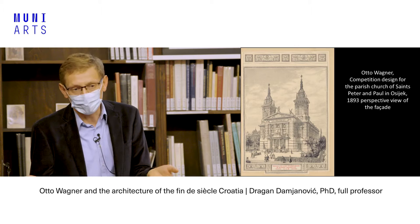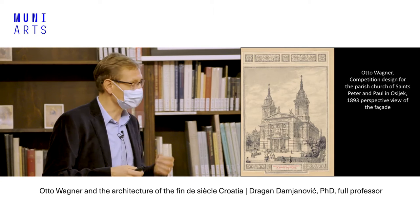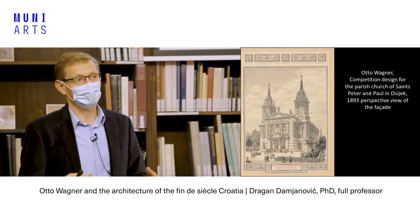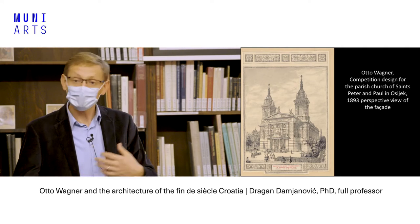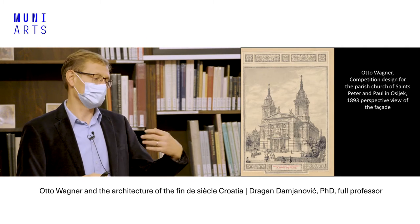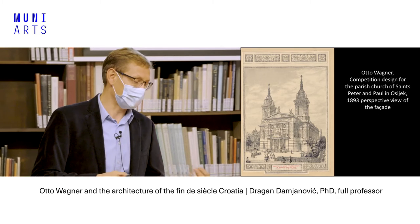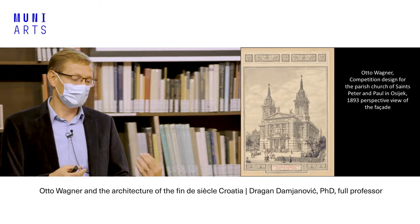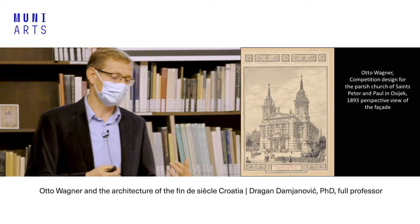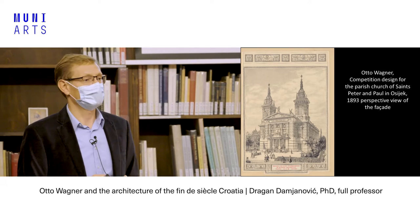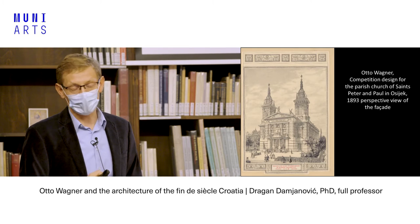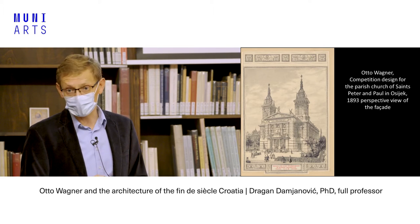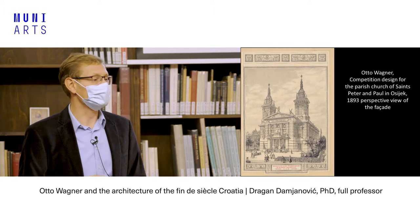In 1893, the local community decided to organize a competition for the church plans, and 31 designs were sent by various architects. The designs were coded, as was usual for the period. The jury included members of the local community as well as architects from Vienna — Ludwig Wächtler, Julius Hermann (who was the Dombaumeister of St. Stephen's Cathedral at the time), and Victor Luntz, a professor at the Academy of Fine Arts in Vienna and successor of Friedrich von Schmidt at the Gothic School of the Academy.